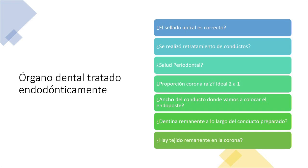También hay que revisar la salud periodontal: hay que sondear, doctores, tener una sonda periodontal para encontrar cómo está nuestro periodonto. La proporción corona-raíz es fundamental: para colocar un poste y una corona necesitamos raíz suficiente para anclarnos. Si no tenemos una raíz lo suficientemente larga, es probable que fracase en el mediano plazo. ¿Qué tan ancho es el conducto? No es lo mismo un primer tratamiento que un retratamiento que deja un conducto mucho más amplio, o un diente muy joven con paredes muy delgadas.